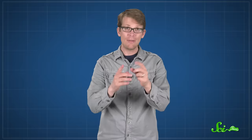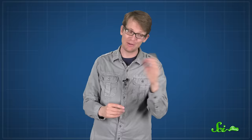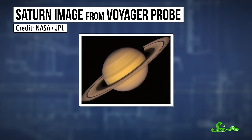All the tiny satellites in the same ring had to be moving in the same direction and at the same speed, or else they would crash into each other and the whole system would fly apart. Maxwell also predicted that the rings would spread apart gradually until they disappeared because of the effects of Saturn's gravity. And that is happening. But until then, we have rings. More than a hundred years later, the Voyager probes would fly by Saturn and send back some pictures proving that he was totally right.